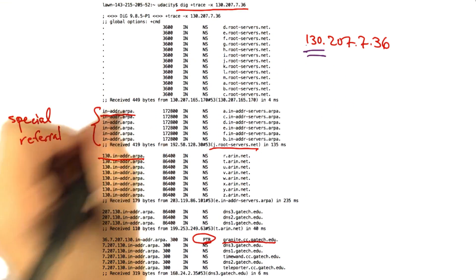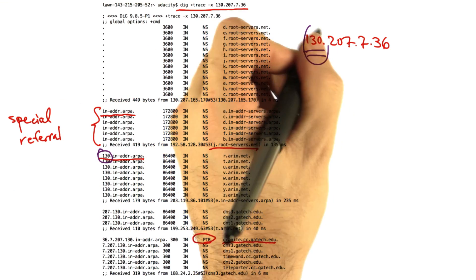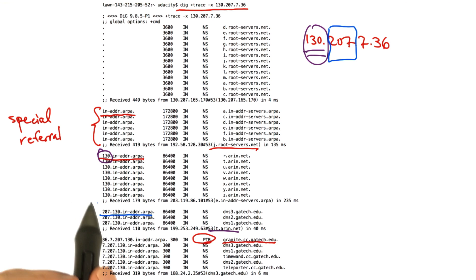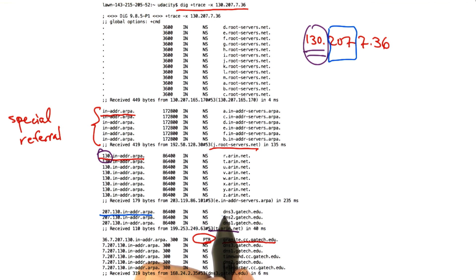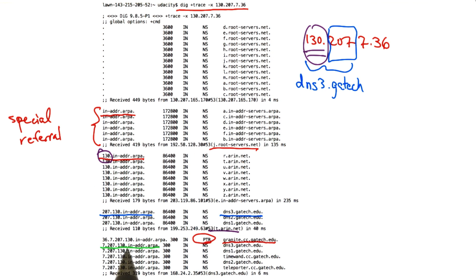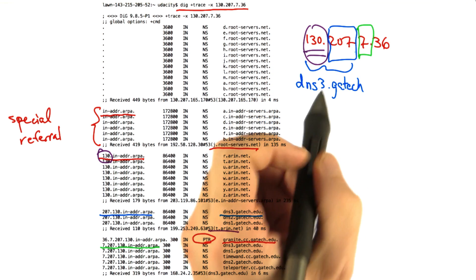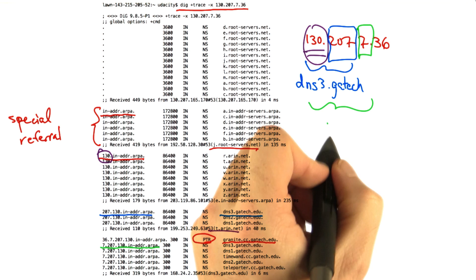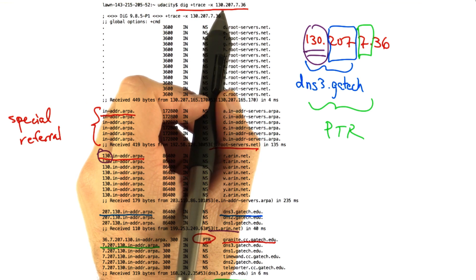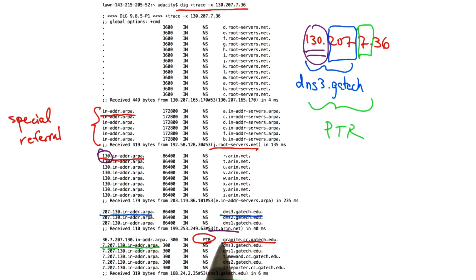Subsequently, we see a referral to 130.in-addr.arpa, corresponding to the first octet of the IP address. Next, when we ask ARIN about 130.in-addr.arpa, we receive another referral, which is to 207.130.in-addr.arpa. And because 130.207 is allocated to gatech.edu, ARIN knows that the appropriate referral for this part of the address space is to dns1, dns2, or dns3.gatech.edu. Next, we issue a query for 7.207.130.in-addr.arpa, corresponding to the first three octets, and now we actually get the PTR, because dns3.gatech.edu knows the reverse mapping between 130.207.7.36 and the name for that IP address.